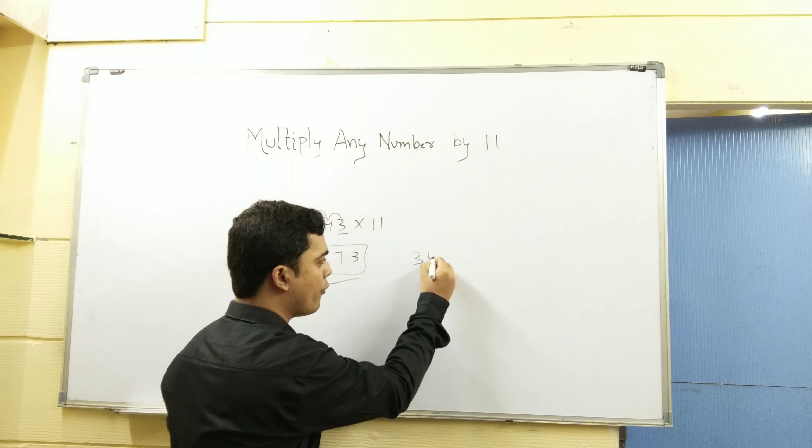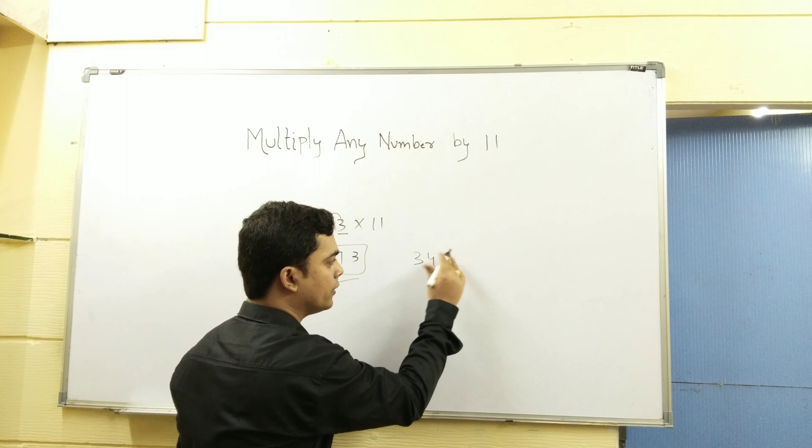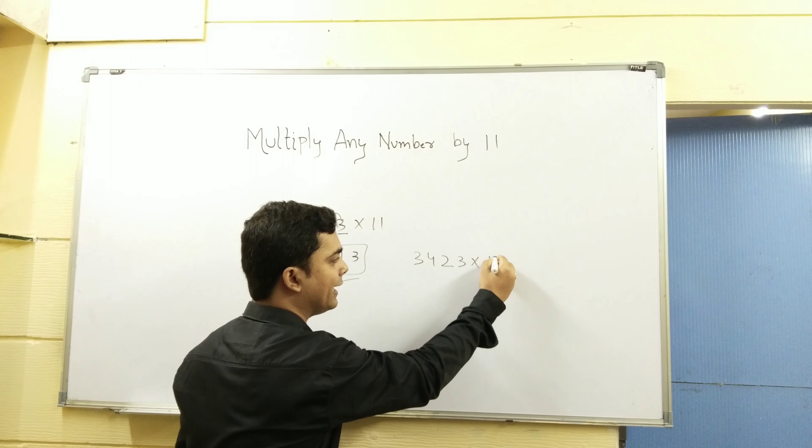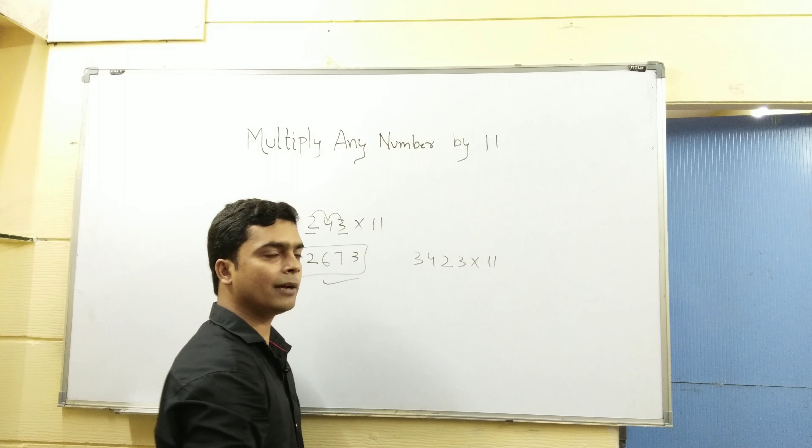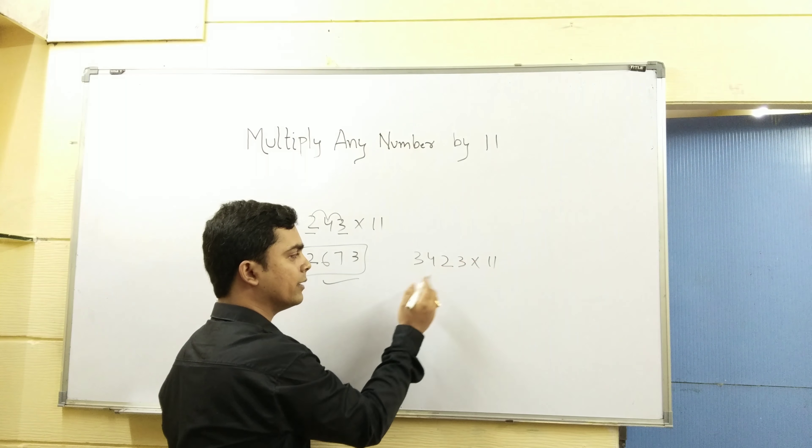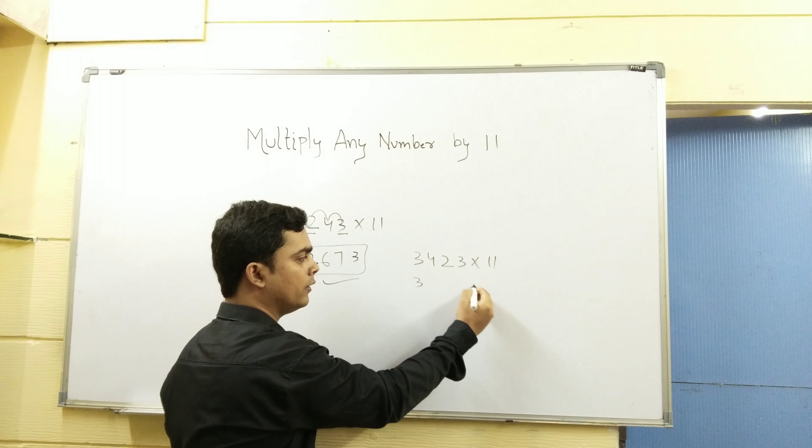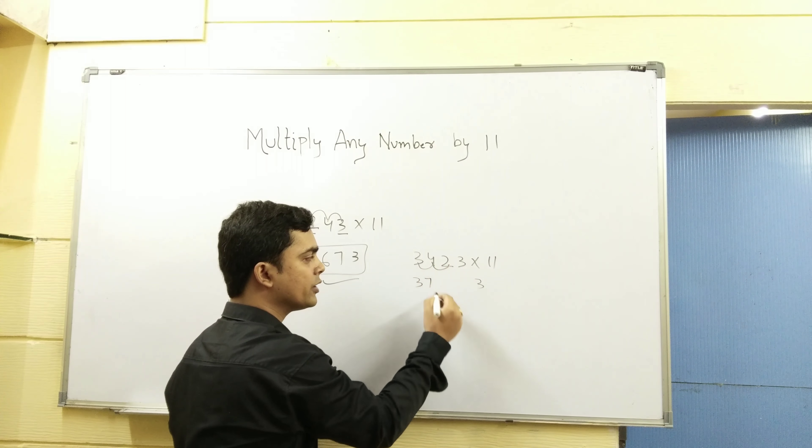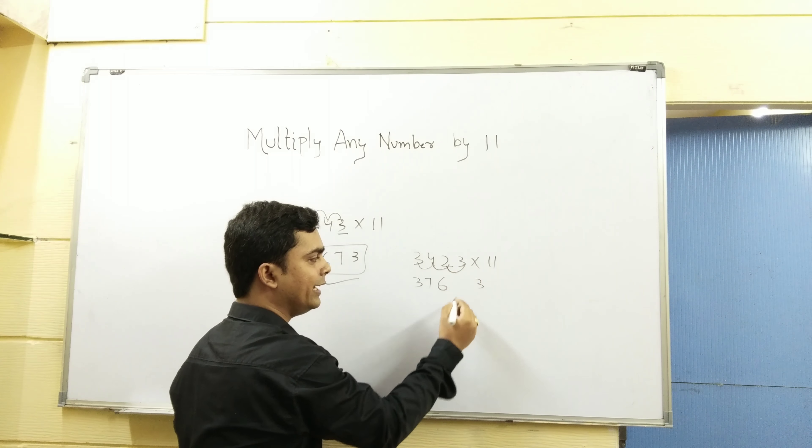3423 multiply by 11. First number and last number. 3, 3. 3 plus 4, 7. 4 plus 2, 6. 2 plus 3, 5.